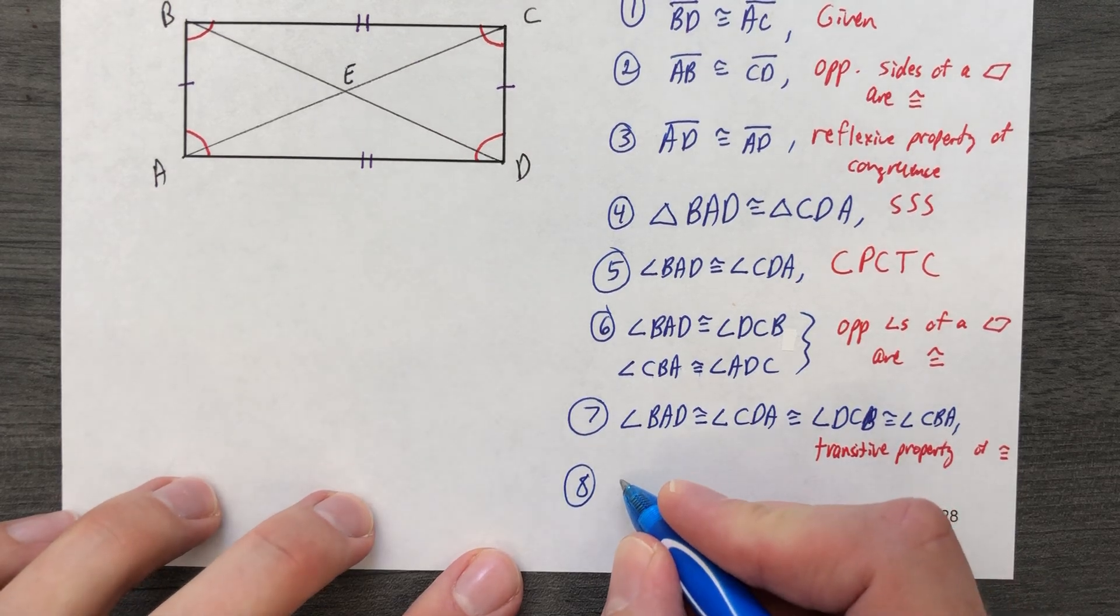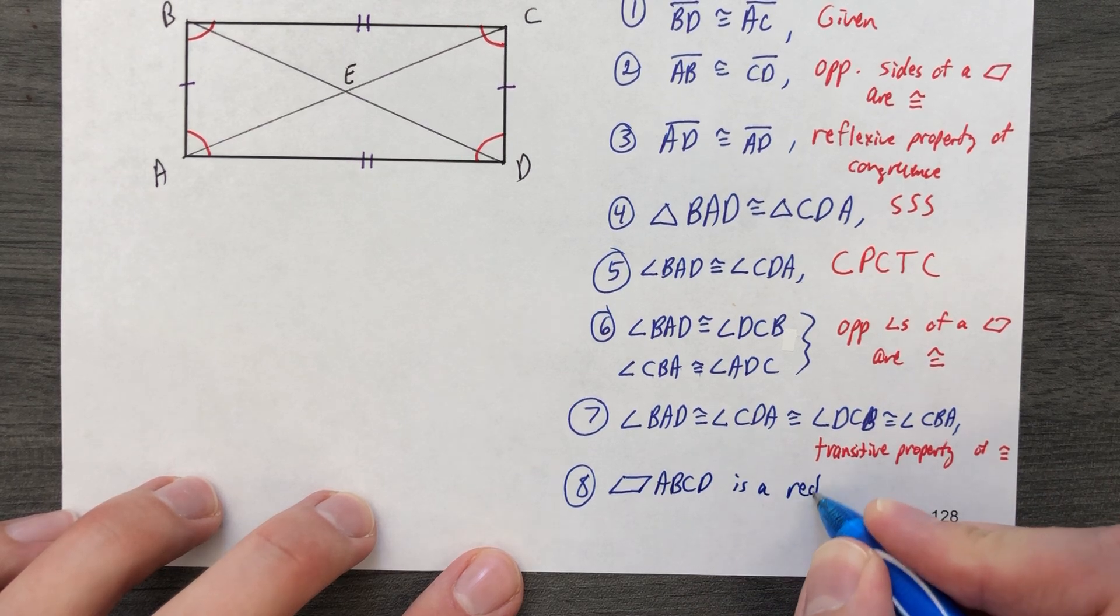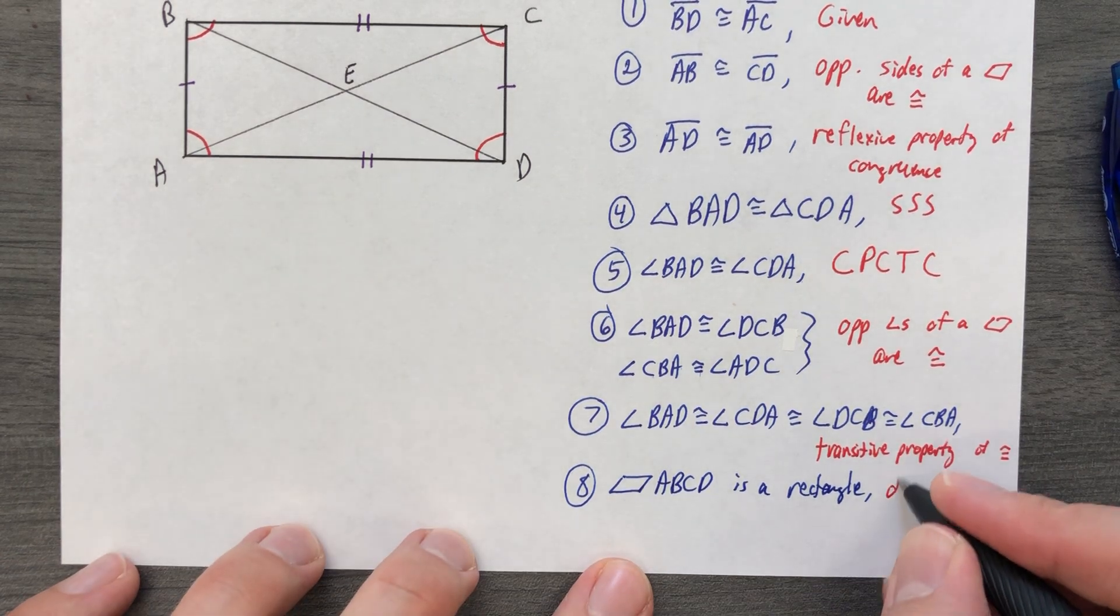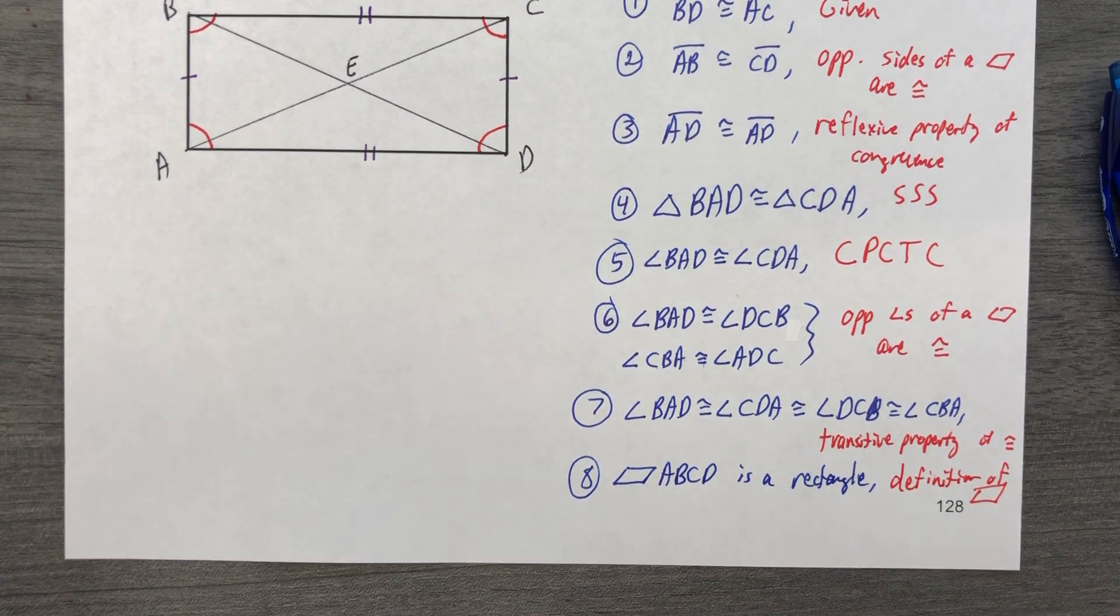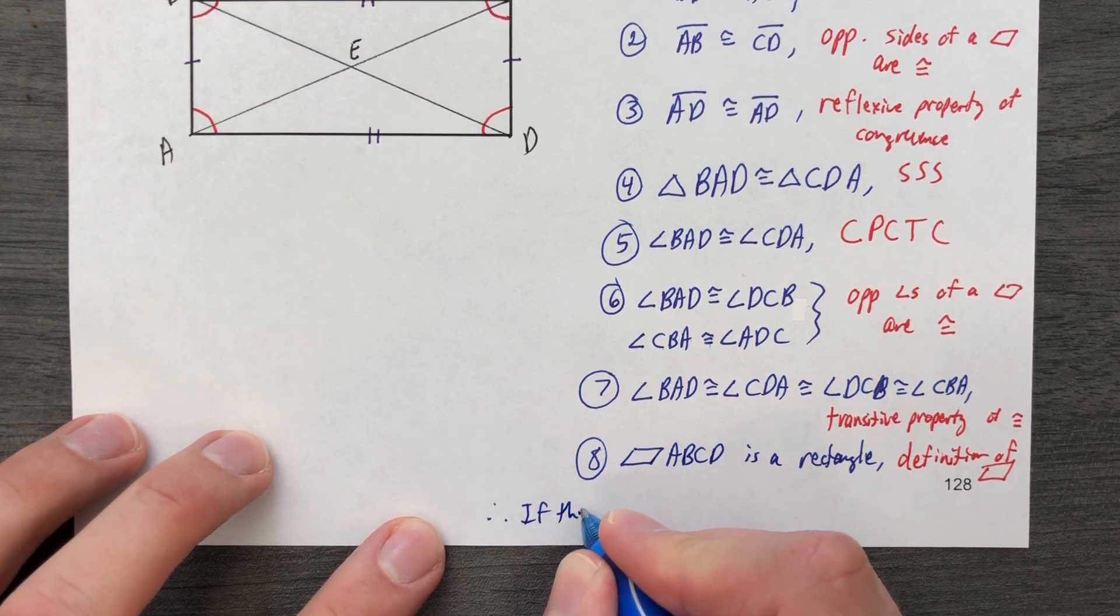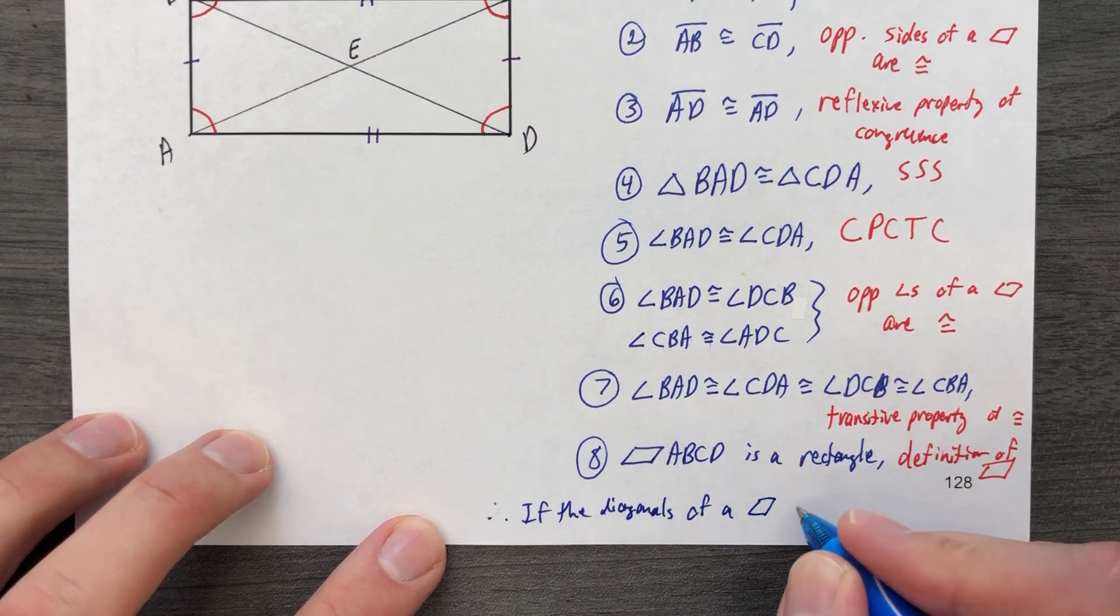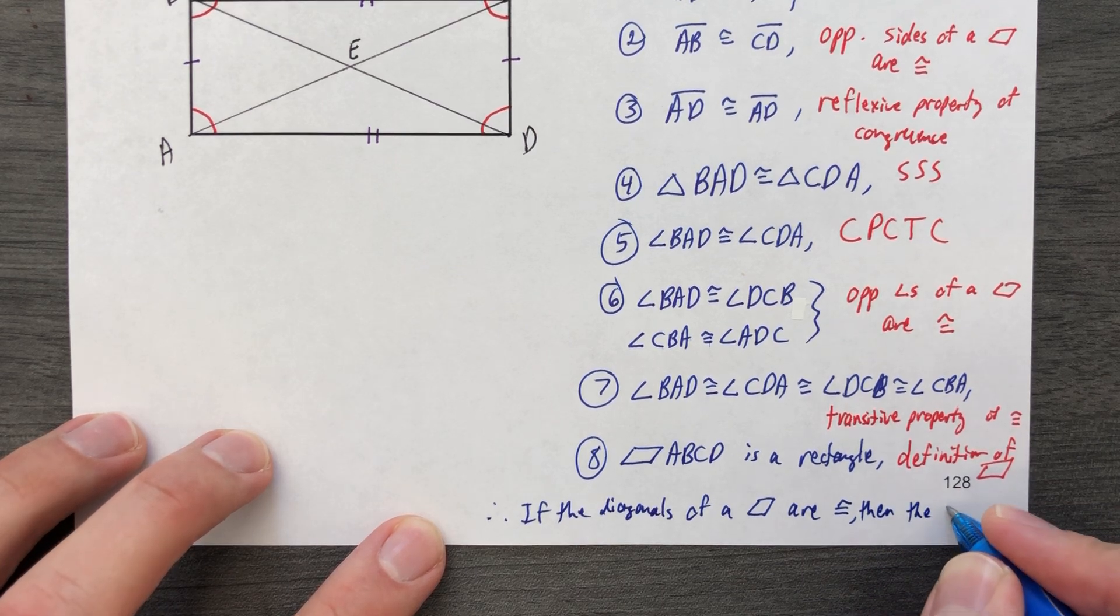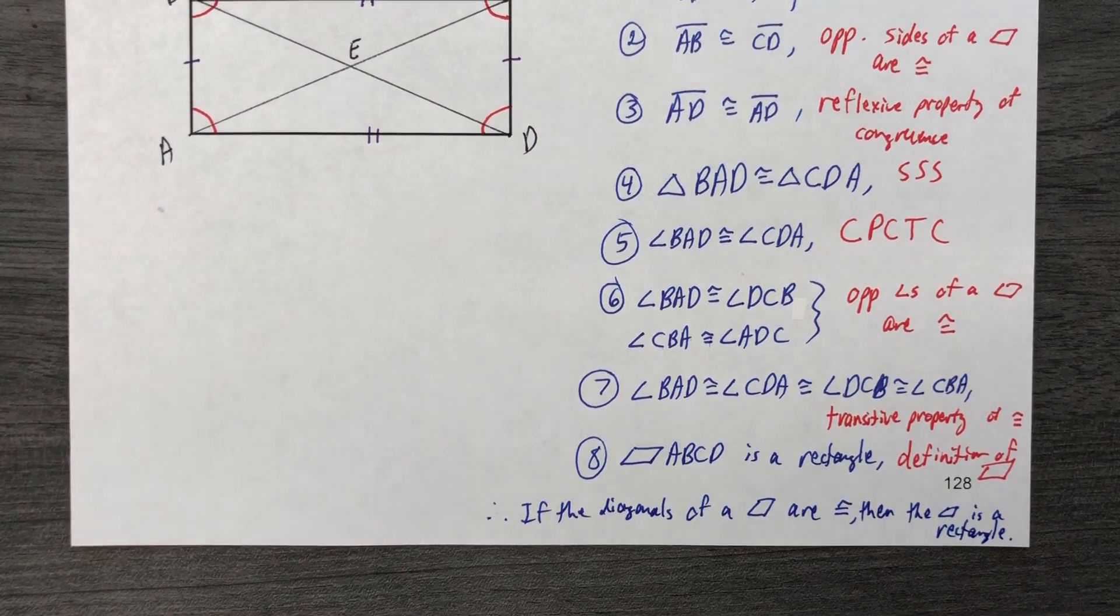So parallelogram ABCD is a rectangle. And the reason for that is because all four angles are congruent. Therefore, if the diagonals of a parallelogram are congruent, then the parallelogram is a rectangle. Done.